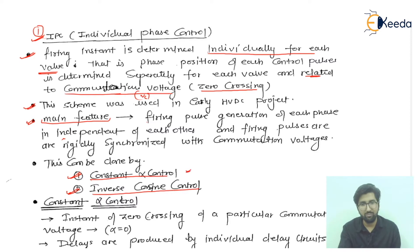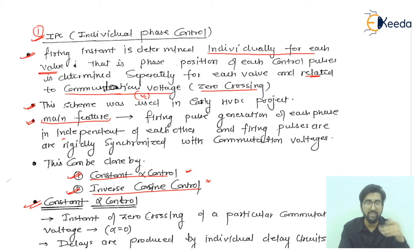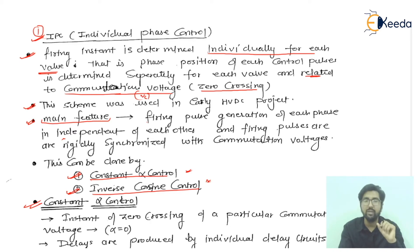The constant alpha control is actually based on the zero crossing of a particular commutation voltage when alpha is equal to zero. Since this is a converter control, we are transforming AC to DC and DC to AC. When controlling at the rectified side, we have the zero crossing because sine and cosine waves cross zero every time. In one cycle they are crossing three times, so the instant of zero crossing of a particular commutation voltage corresponds to alpha equal to zero.